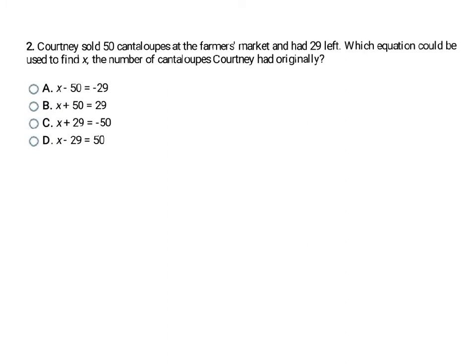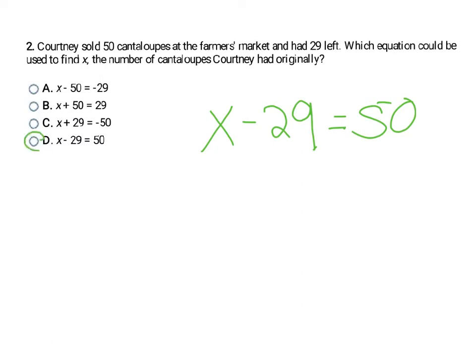This next question is the same idea — translating a word problem into an equation. Courtney sold 50 cantaloupes at the farmer's market and had 29 left. Which equation could be used to find x, the number of cantaloupes Courtney originally had? She originally had x cantaloupes. She sold 50 and had 29 left. If I subtract the 29 left from the original amount, that gives me the 50 sold. That makes the answer D.